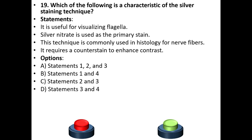Nineteenth question. Which of the following is a characteristic of the silver staining technique? Statements: It is useful for visualizing flagella. Silver nitrate is used as the primary stain. This technique is commonly used in histology for nerve fibers. It requires a counter stain to enhance contrast.